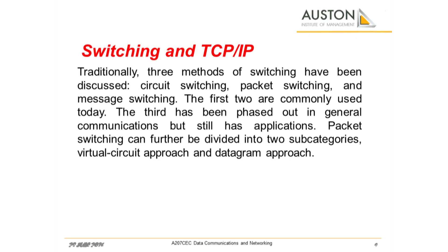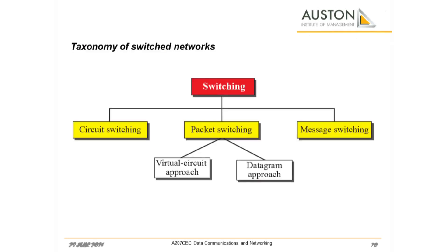Switching can happen at several layers of the TCP/IP protocol suite: at the physical layer, at the data link layer, and at the network layer. A circuit switched network consists of a set of switches connected by physical links. A connection between two stations is a dedicated path made of one or more links; however, each connection uses only one dedicated channel on each link. If the message is going to pass through a packet switched network, it needs to be divided into packets of fixed or variable size. The size of the packets is determined by the network and the governing protocol.